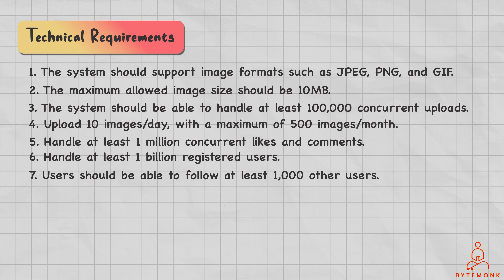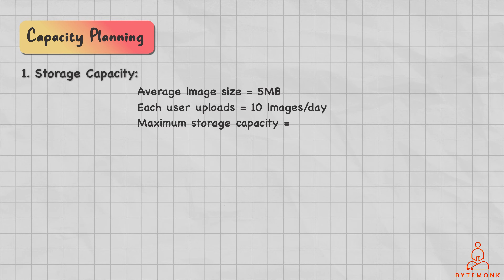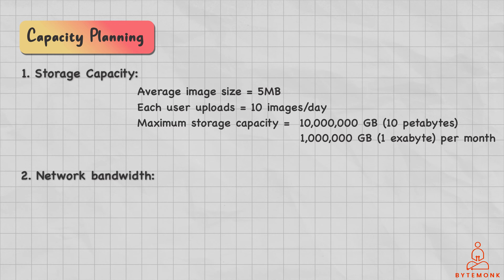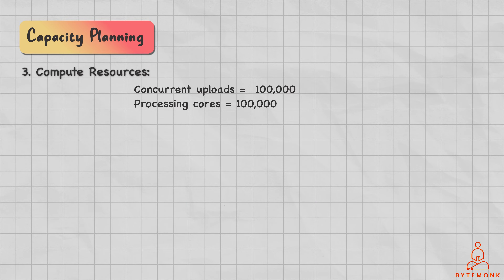Now based on the technical requirements we set up, let's do some capacity planning. Assuming an average image size of 5 MB, if a user uploads 10 images per day for a month, the maximum storage capacity required for image uploads would be 10 PB. However, not all users will upload images daily, so we can use a more realistic assumption that 10% of registered users upload images daily. With this assumption, the storage capacity required would be 1 exabyte per month. Assuming an average image upload time of 5 seconds and a maximum of 100,000 concurrent uploads, the system needs to support a minimum network bandwidth of 50 Gbps. And to handle 100,000 concurrent uploads, the system needs to have at least 100,000 processing cores available. Assuming a server with 32 cores, we would need at least 3,000 servers.